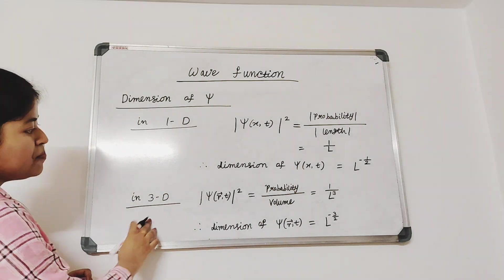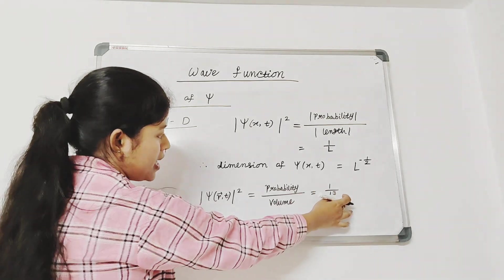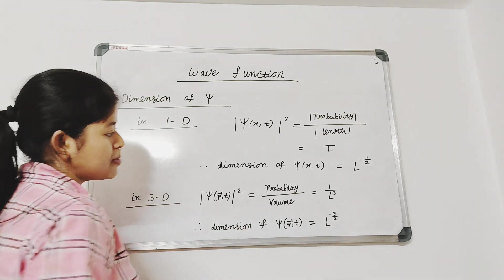And in 3D, mod psi square equals probability by volume which equals 1 by L cube. So, the dimension of psi in 3D is L to the power minus 3 by 2.